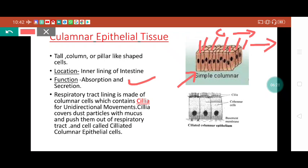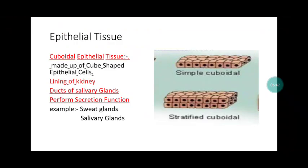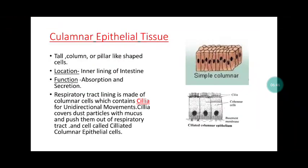Cilia-containing columnar epithelium cells are also present in the fallopian tube of the female reproductive tract, where they move the ovum from the ovary towards the uterus. So cilia perform specialized movement functions. Please keep in mind the diagram showing the small cilia structures.